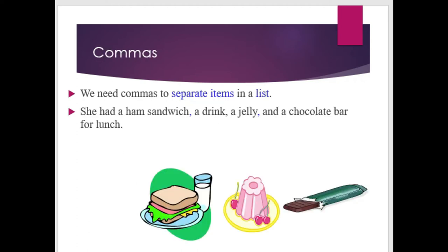Another type of punctuation mark is the comma. How and where do we use commas? We need commas to separate items in a list. For example: 'She had a ham sandwich, a drink, a jelly, and a chocolate bar for lunch.'